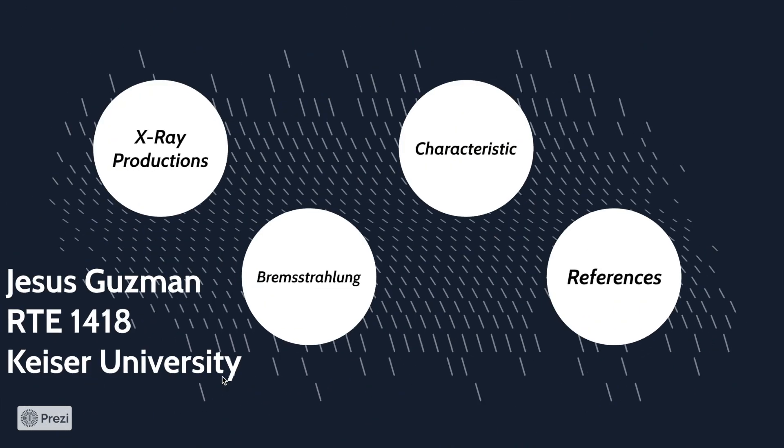In conclusion, for an x-ray photon to be produced, two interactions must occur: Bremsstrahlung and characteristic. As Bremsstrahlung breaks down the incoming electron, characteristic applies binding energy to remove electrons from the inner shell of the atom. That concludes my presentation on x-ray production. Thank you for watching.